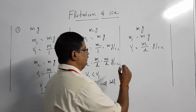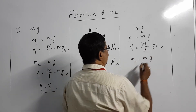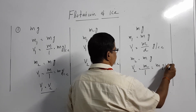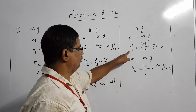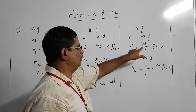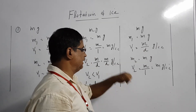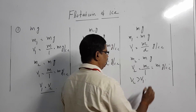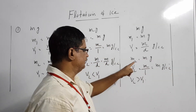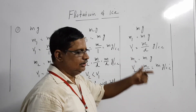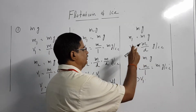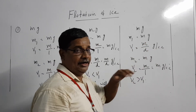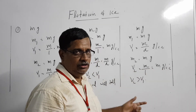Now let the ice melt. We obtain m grams of water. The volume of water supplied (V2) is mass divided by density of water (which is 1), giving m gram per cubic centimetre. Comparing: V1 equals m/D and V2 equals m. Since D is greater than 1, V2 is greater than V1. The ice supplies a volume of water greater than the volume of liquid it was displacing, so the level will rise.